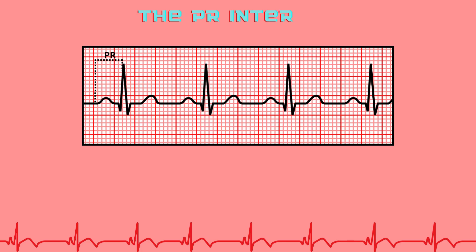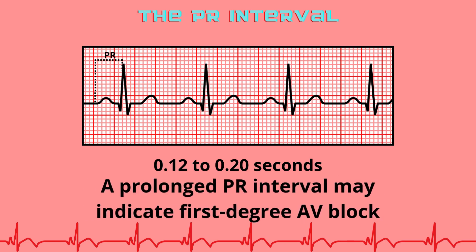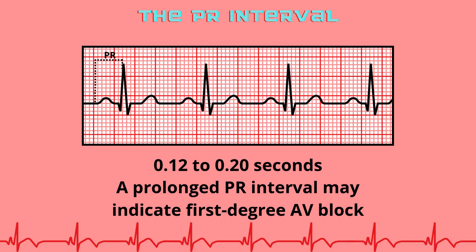The PR-interval spans from the beginning of the P-wave to the beginning of the QRS-complex. It reflects conduction through the atria and AV node. Normal range is 0.12 to 0.20 seconds, which is 3 to 5 small boxes. A prolonged PR-interval may indicate first-degree AV block.